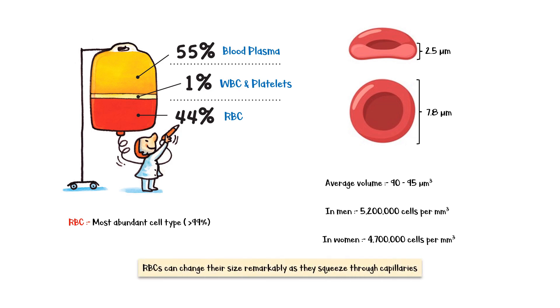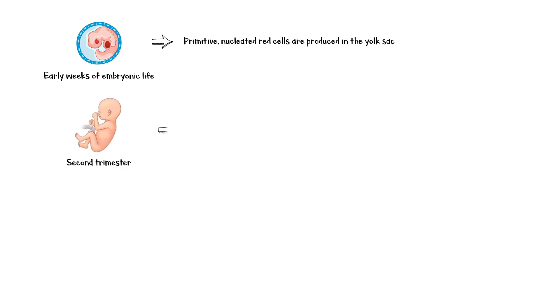Red cells can change their shape remarkably as they squeeze through capillaries; in fact, they can get deformed into almost any type. During the early weeks of embryonic life, primitive nucleated red cells are produced in the yolk sac. In the second trimester, the liver is the main organ to produce red cells, although the spleen and lymph nodes also produce small amounts.